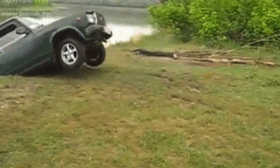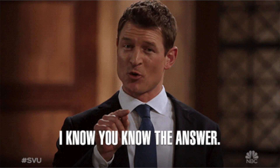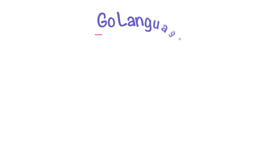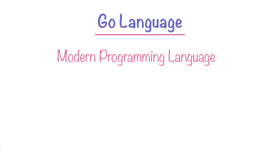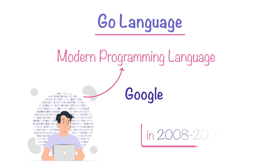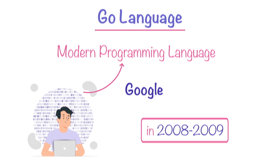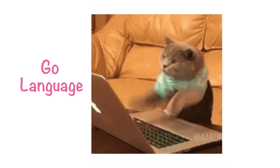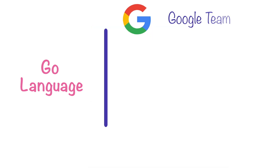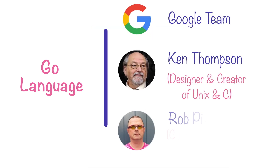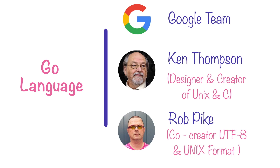Go language is a modern programming language created by developers at Google in around 2008-2009. Some very smart developers came together to create this language — people like Ken Thompson, Rob Pike, and many others.